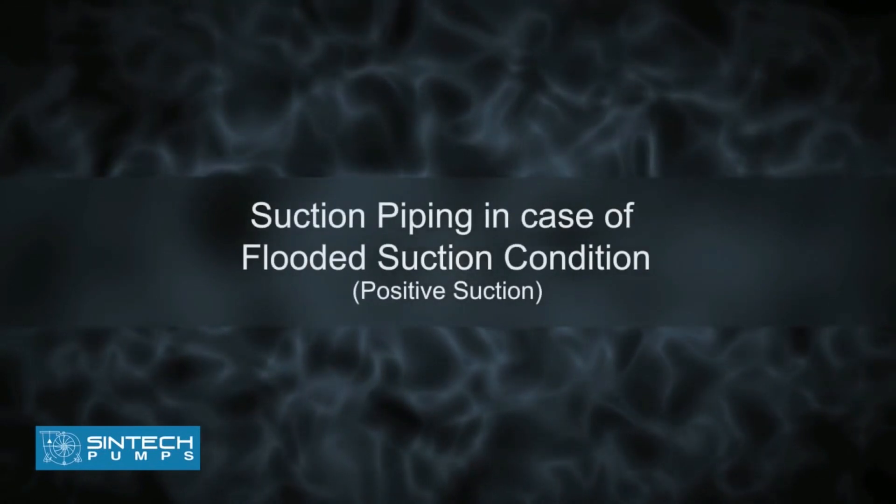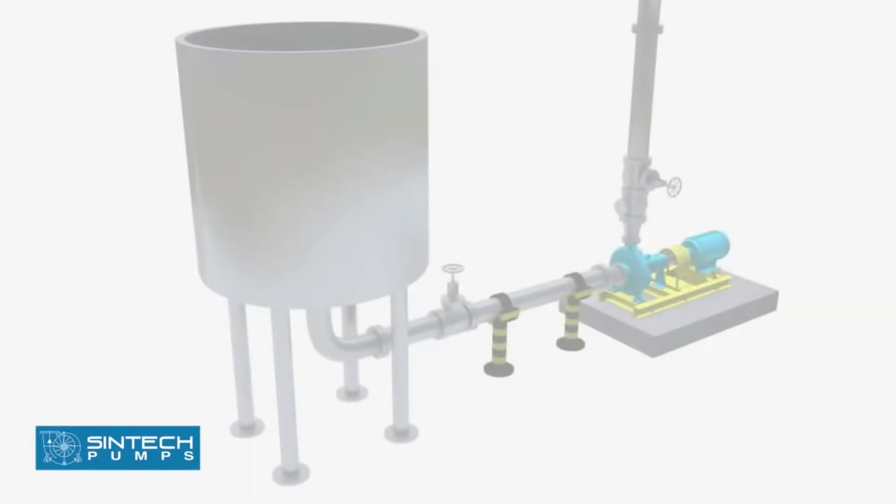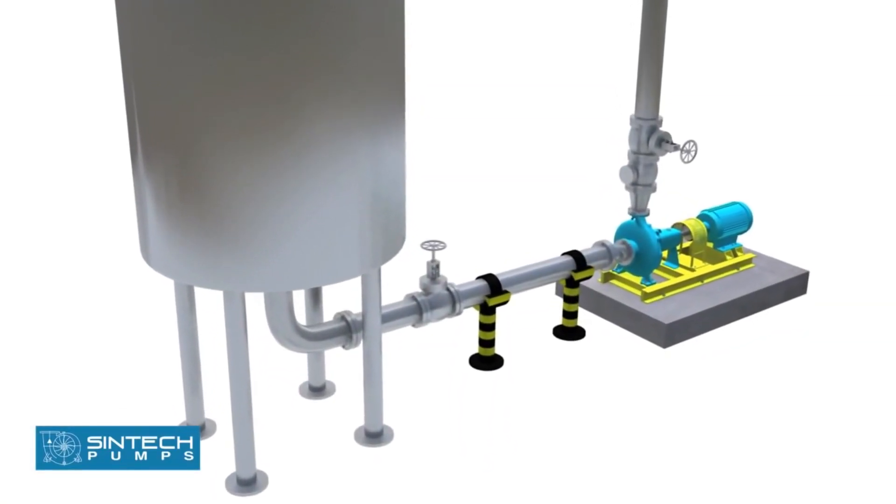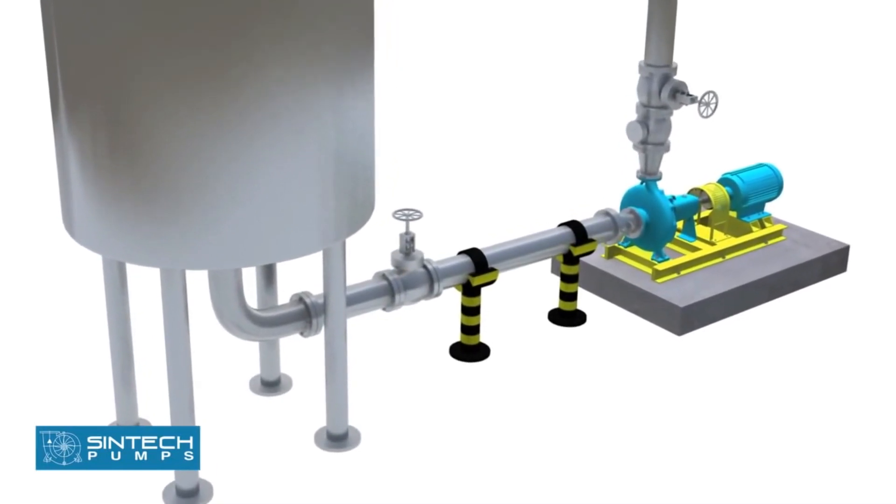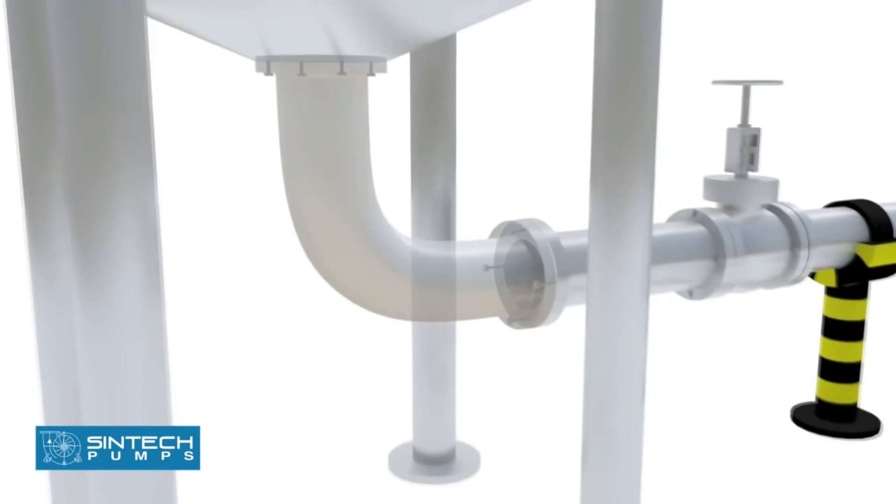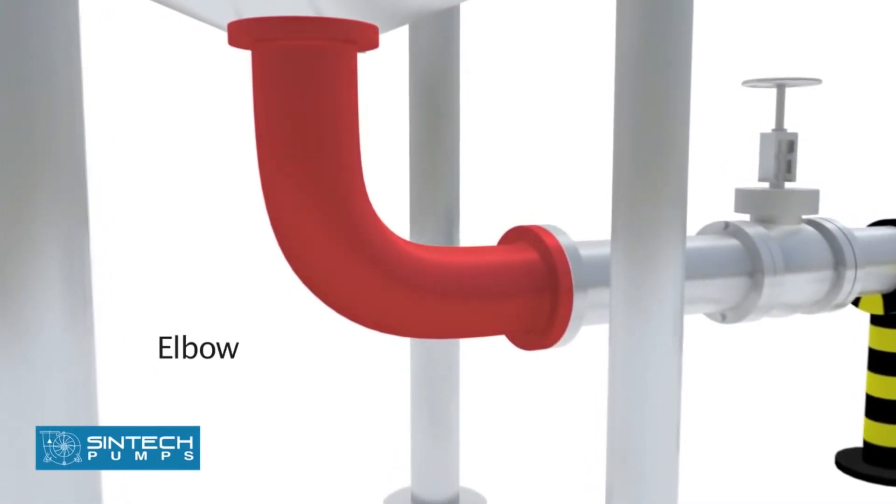Suction piping in case of flooded suction condition (positive suction): In case the water is being supplied to the suction through gravity, for example an overhead tank, a slightly different setup is needed. The elbow should be of standard type or of the long radius type.